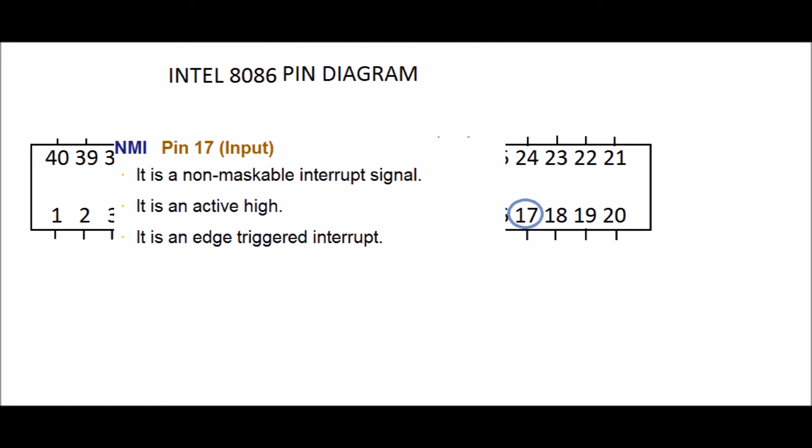NMI, PIN 17. This is input PIN. NMI stands for non-maskable interrupt signal. Non-maskable interrupt means it is hardware interrupt and can't be disabled by software. It is an active high. It means there is no bar over NMI PIN. It is an edge-triggered interrupt. When we give edge-trigger to PIN 17, this interrupt starts working and stops all the processes in microprocessor.